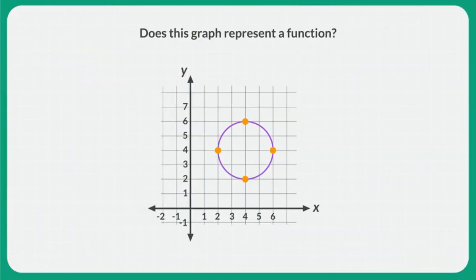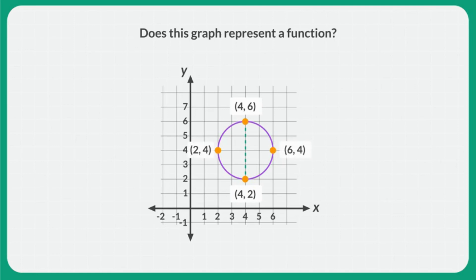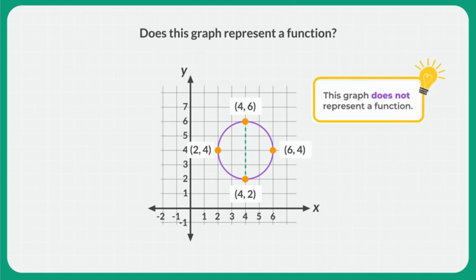Use what you've learned to figure out if this graph represents a function. The first point is 2, 4, and the second point is 4, 6. The next point is 6, 4. It's okay that the inputs 2 and 6 share an output of 4 — still a function so far. The last point is at 4, 2. This is the same input as the second point, so the input of 4 has an output of 6 and 2. Since this graph includes an input that has more than one output, it does not represent a function.